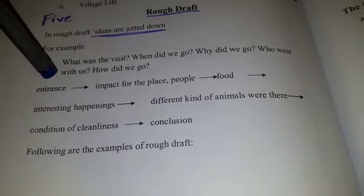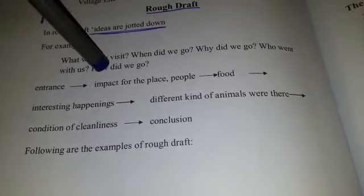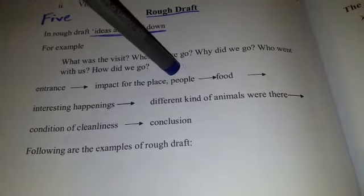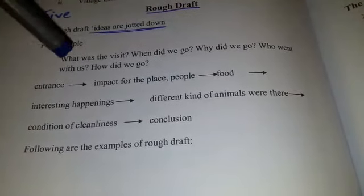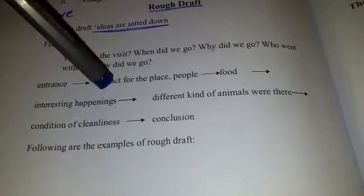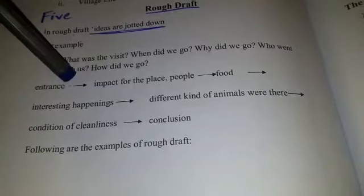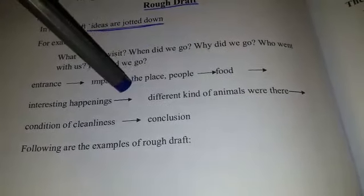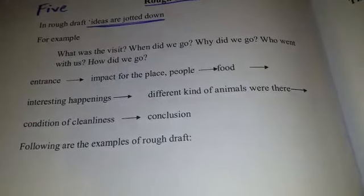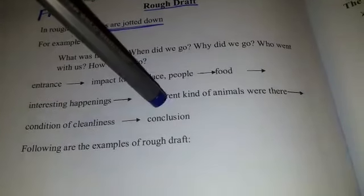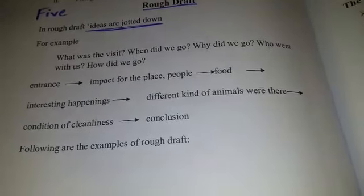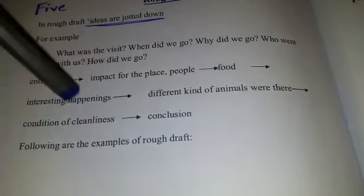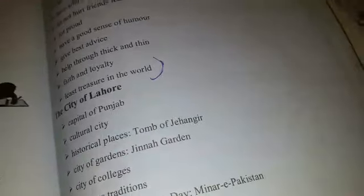That is called a draft. Interest, impact for the place, people, food — interesting, happy, happening. This is another rough draft: different kinds of animals were there — a visit to a zoo rough draft — condition of cleanliness, just a conclusion. Following are the examples of rough draft, and then number 73, city of Lahore.